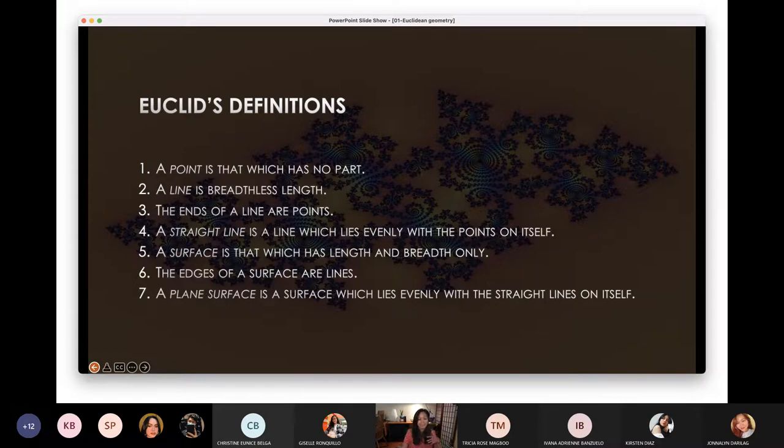Let me read the definition by Euclid. Euclid said, before we get confused if we have different definitions, for example, I say chair, maybe your definition of chair is different from my definition of chair. So Euclid has this definition so that all of us will think the same. So he said that for him, a point has no part. A point, that's a point because it has no part. A line. If it has length, that's a line. The end of a line are points. And even within the line are points.